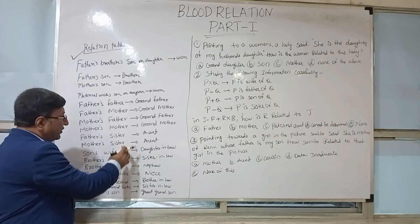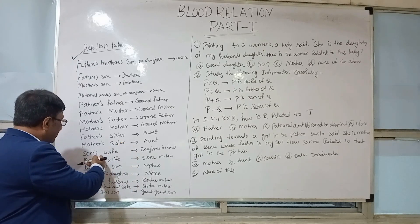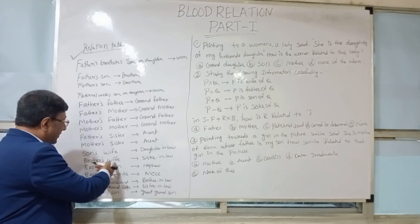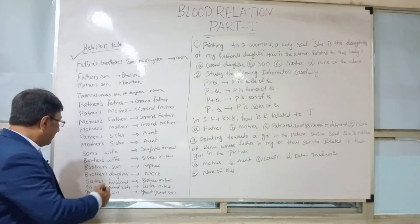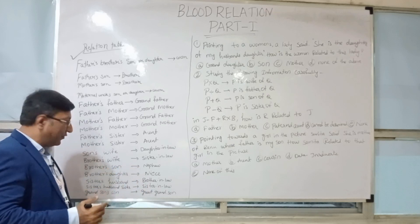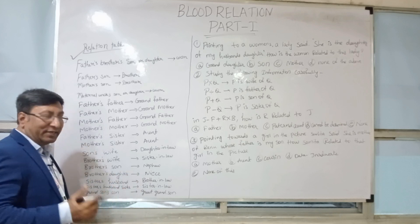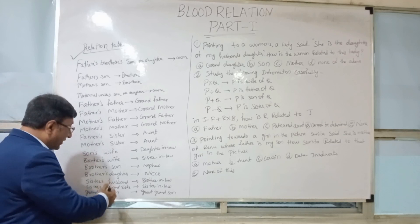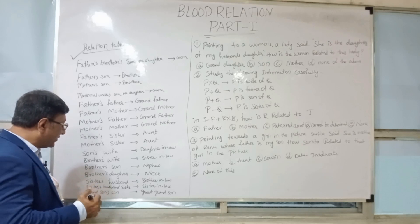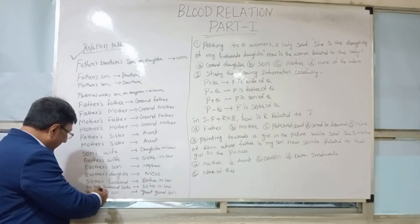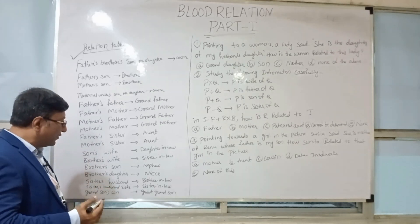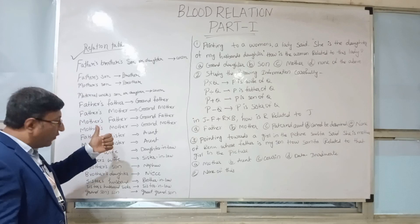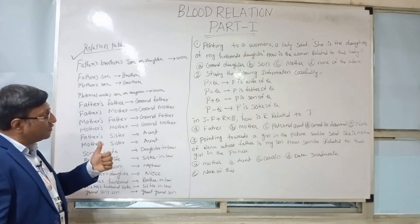Mother's sister is also your aunt. Son's wife is your daughter-in-law. Brother's wife is also sister-in-law. Brother's son is your nephew. Brother's daughter is your niece. Sister's husband is your brother-in-law. Sister's husband's sister is called sister-in-law. Grandson's son is your great-grandson. This is the basic relation table. If you understand all these relations clearly, then we will solve questions very easily.